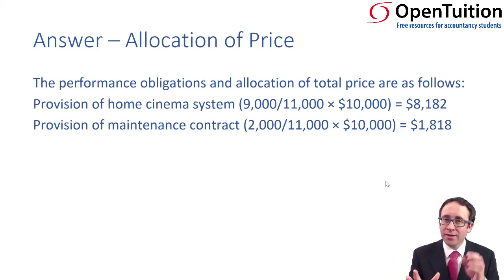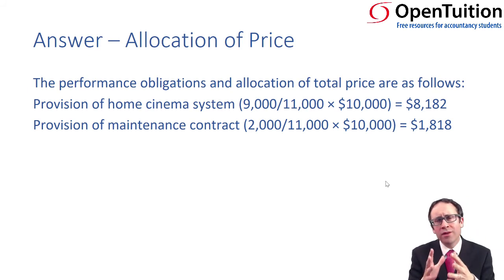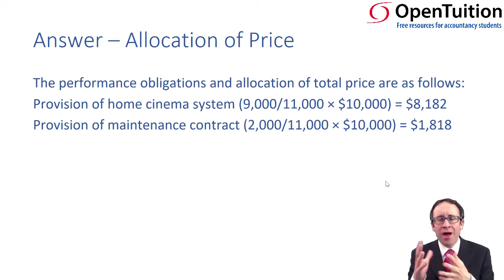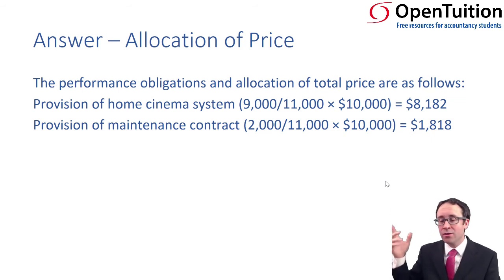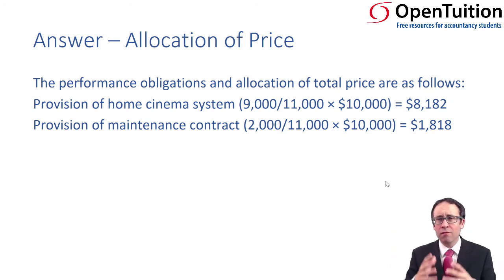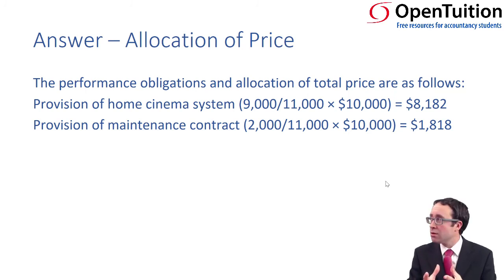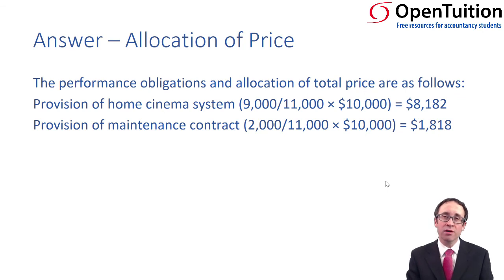Once we've got there, we need to think about how we then recognise that revenue — we haven't yet recorded the debits and credits within the financial statements. That's what we're going to look at in the next video. We've done the four steps; we now need to go through the fifth step, which is how we recognise the revenue of $8,182 from the sale of goods and the revenue of $1,818 from the provision of the services.